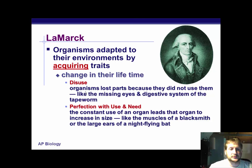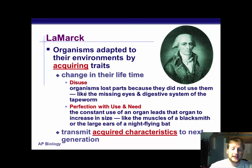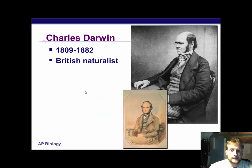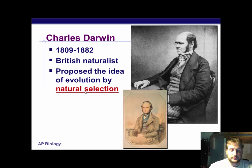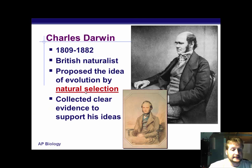He believed organisms transmitted acquired characteristics to the next generation — something I could acquire during my lifetime would then be passed on to the next generations. Charles Darwin had a different view about this. Born in 1809, died in 1882, he was a British naturalist born into a pretty rich family. He proposed the idea of evolution by what we call natural selection — that's the big thing from this topic. He collected clear evidence to support his ideas, which is something that Lamarck really didn't do. Darwin did a lot more science as we would see it today.